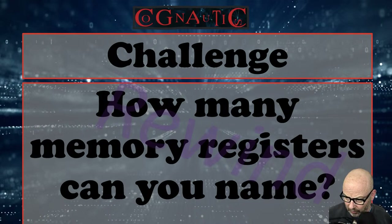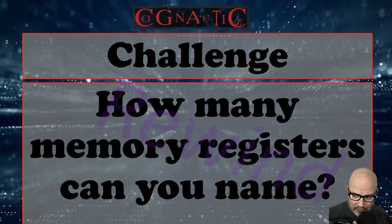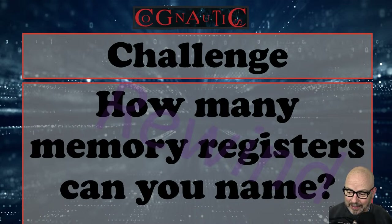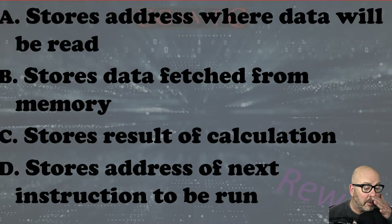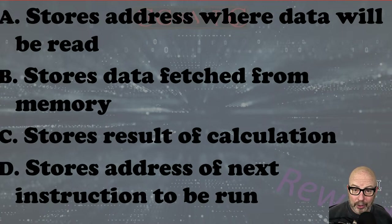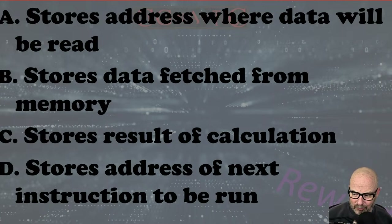While you're busily typing in — or not, as the case may be — there are four people here now. I'll push on; everyone's being quite shy. So here's what we've got. One of them stores the address where data's read. One stores the data fetched from memory. One stores the results of a calculation. And one stores the address of the next instruction to be run. Any ideas?